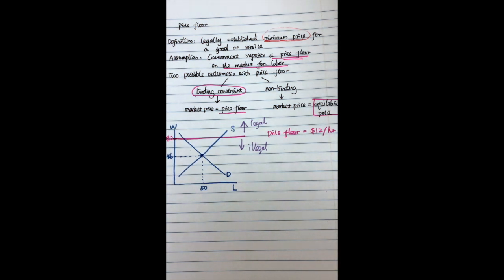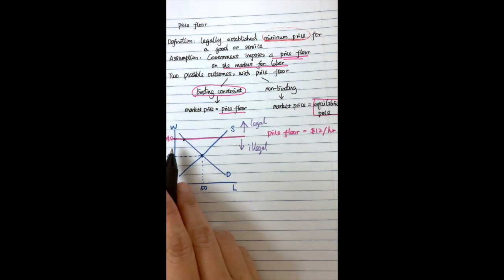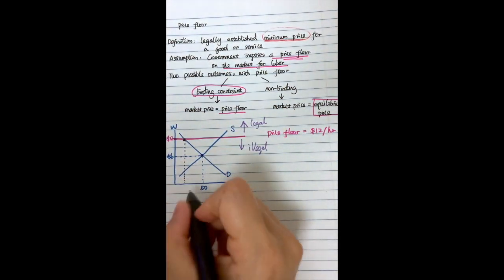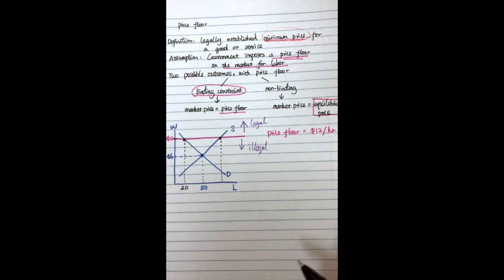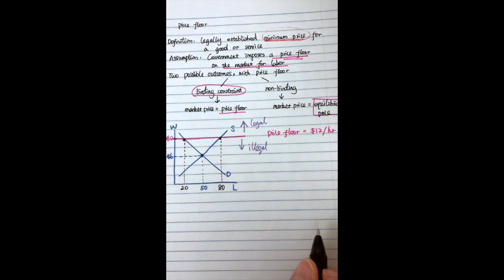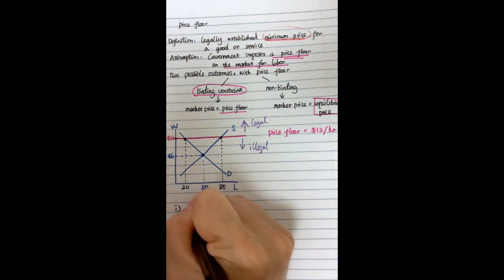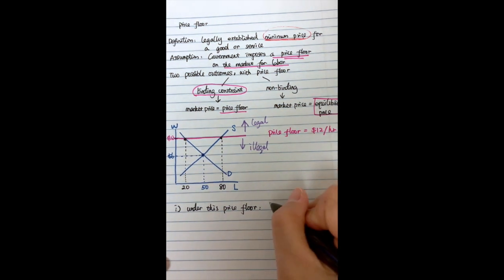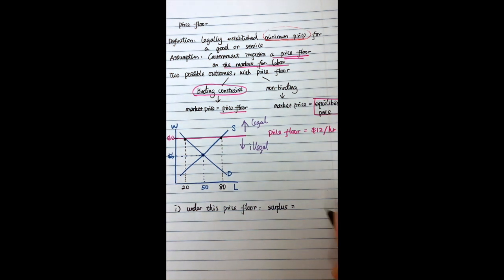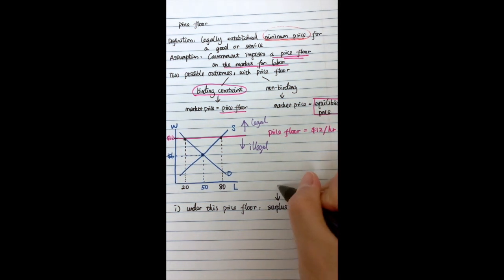At this $12 wage level, wages are higher, so fewer workers will be hired — firms and corporations would like to hire only 20 workers. However, because the wage has increased, more workers would like to offer their labor and join the labor market — perhaps 80 workers. So it will first create a surplus. Under this price floor, there is a surplus equal to 80 minus 20, which equals 60. When the labor market has a surplus, that means unemployment.